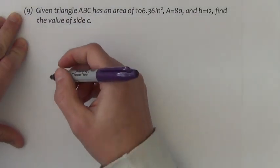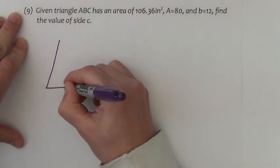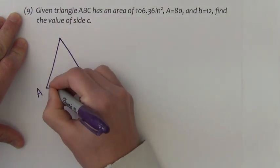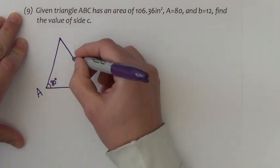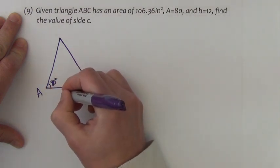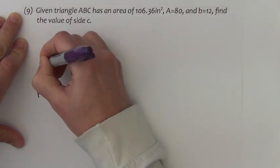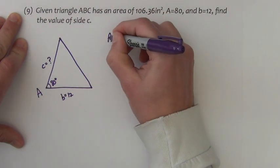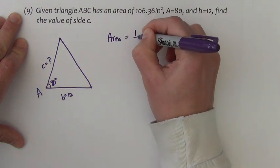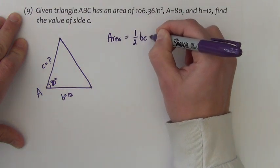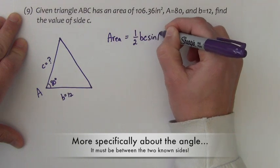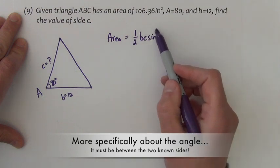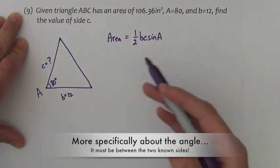This next one is another triangle area problem. In a triangle, if we know an angle and two sides, we should be able to find the area of that triangle using the formula 1 half times the two sides times the sine of the angle. Typically we know both sides and the angle and then we just plug them in, compute it, we've got the area.